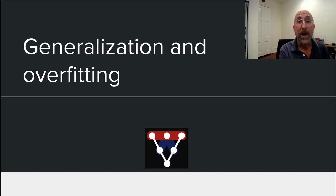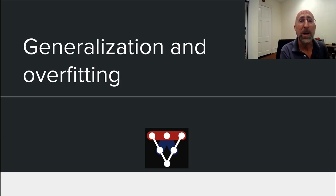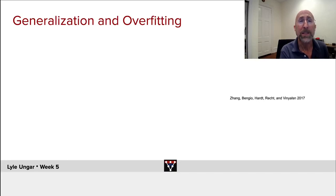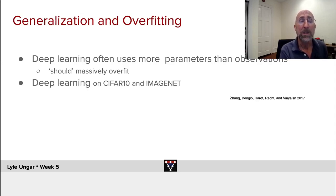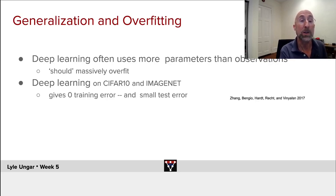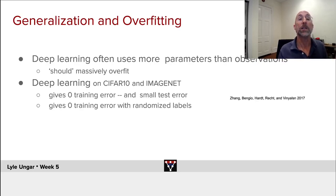In the introduction, I noticed a pattern which I said we would explore this week, and we will actually read a whole paper or piece of a paper on it later. But for now, I want to notice that deep learning often uses more parameters than observations. It should massively overfit, but deep learning experiments actually show that you can get zero training error and small test error, and that you could even get zero training error with randomized labels.